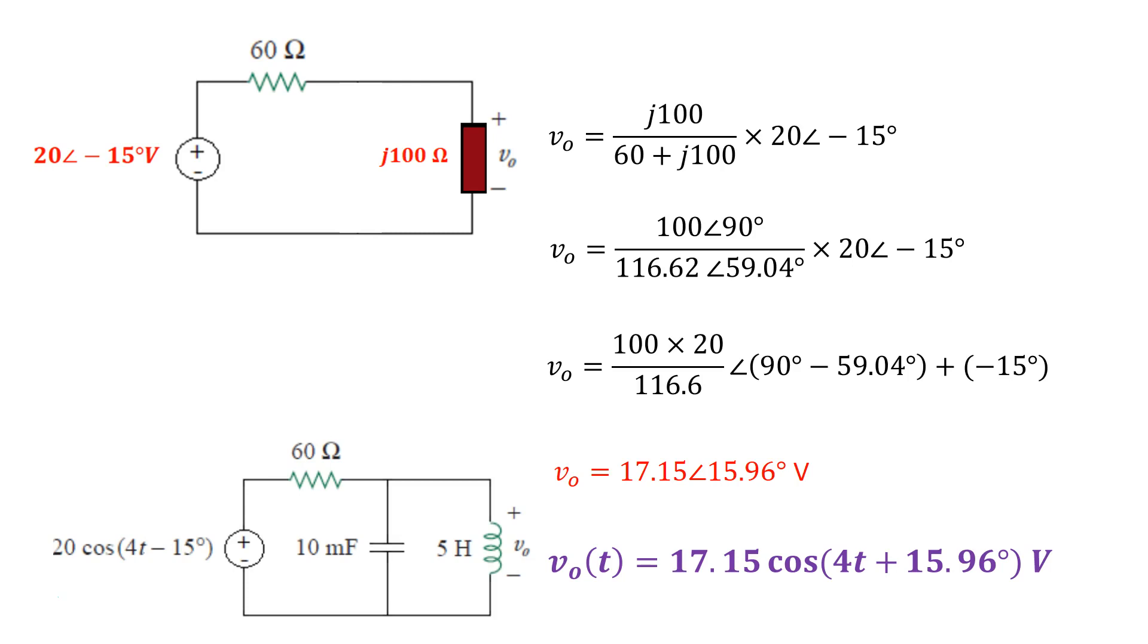So that's the voltage across that capacitor right there. That's what, sorry, the voltage across the capacitor or the voltage across the inductor V0. They're both in parallel. So that's what we were asked to find or prove.